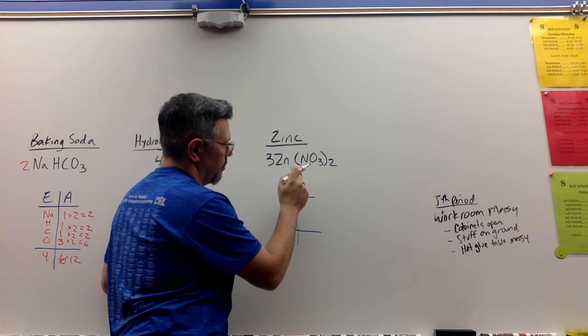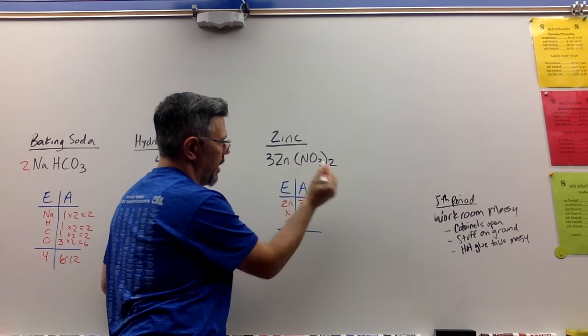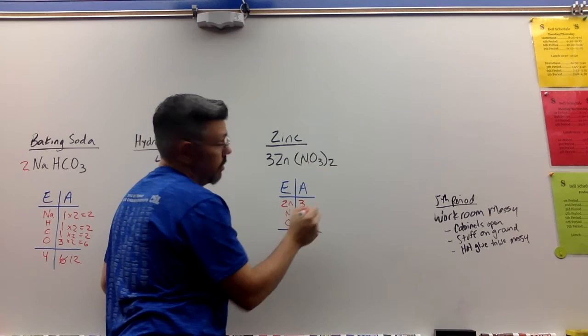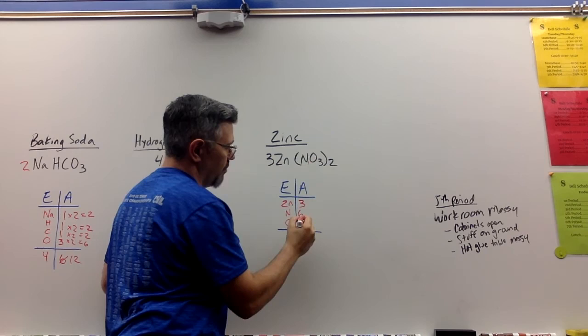So we have three Zn's here. We have, well, let's really look at this. We have one N times two will give me two N's, times three give me six. So let's do the O's. We have three O's times two will give me six, times three will give me 18.